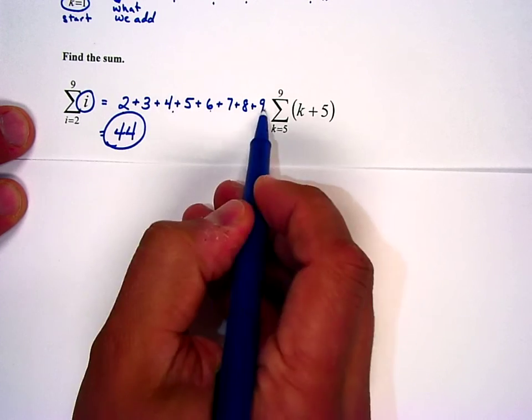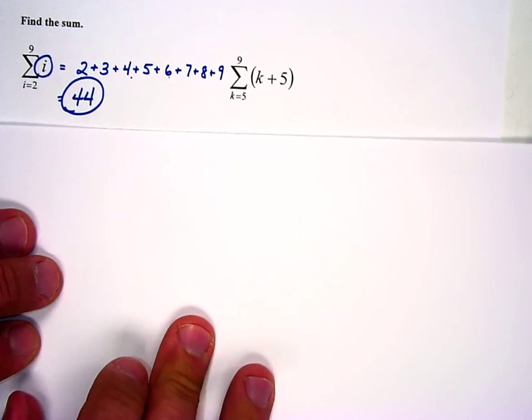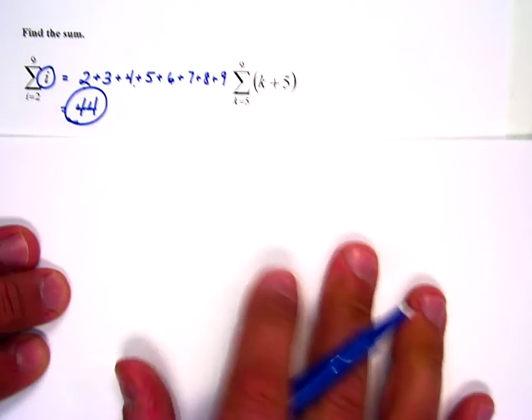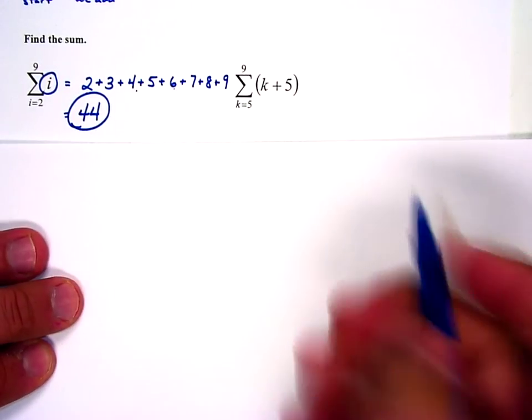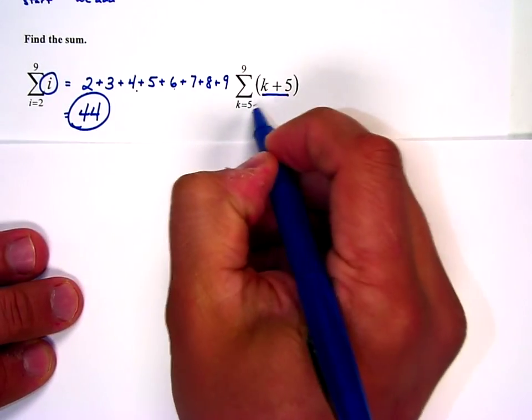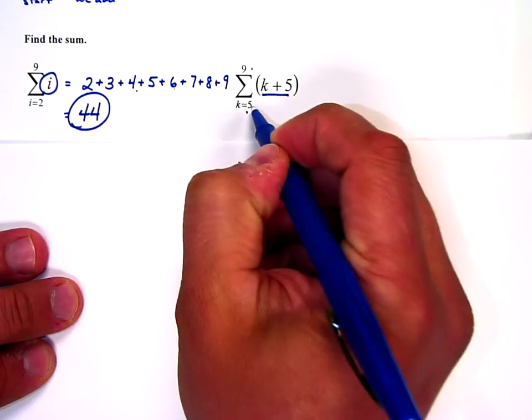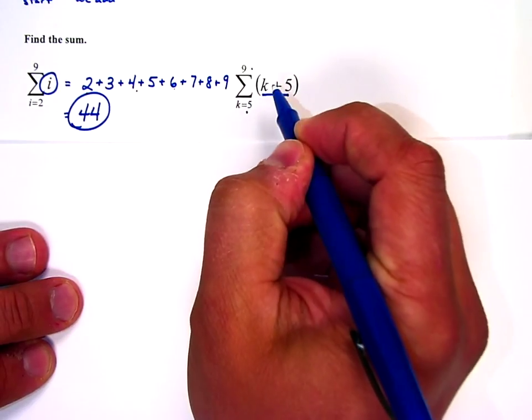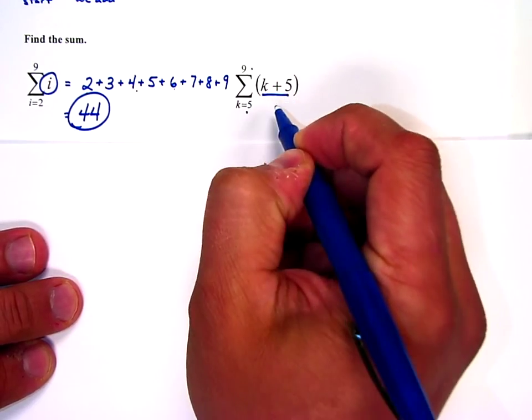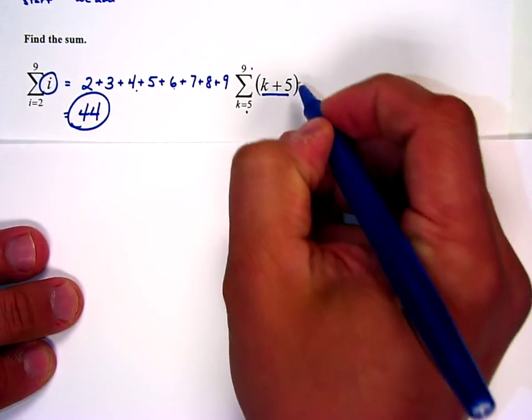That's the sum of i from 2 to 9. 2 is the first, 9 is the last. If we slide over here to this other spot, it's the sum of k plus 5 from 5 to 9. That means I'm going to put in 5, 6, 7, 8, 9, and then add all those terms up.